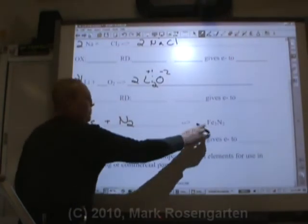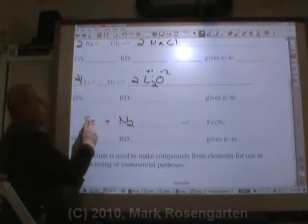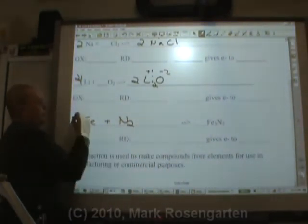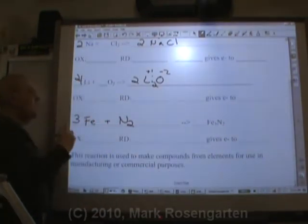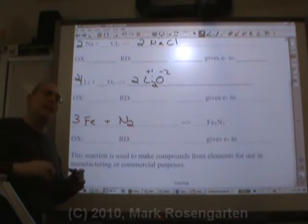So now that we've got iron and nitrogen separated, elements form compounds, we balance it. One iron, three irons, put a three in front. Two nitrogens, two nitrogens. This is now a properly completed and balanced reaction.